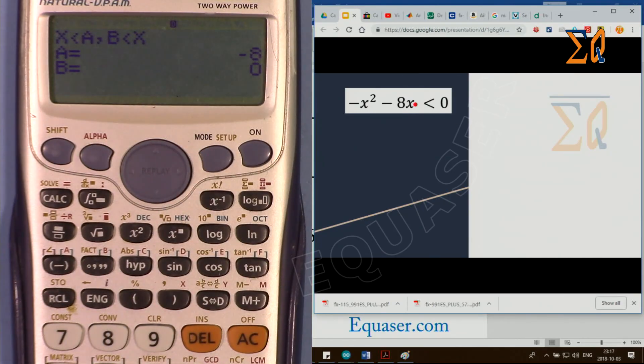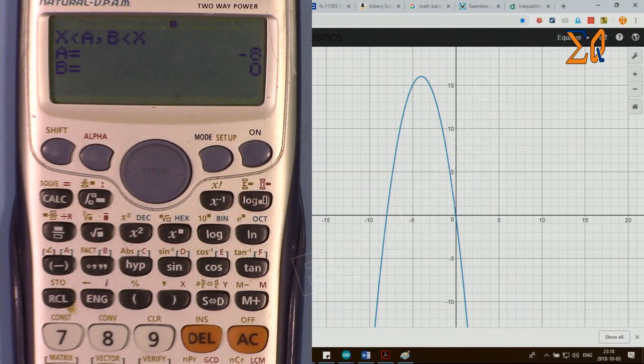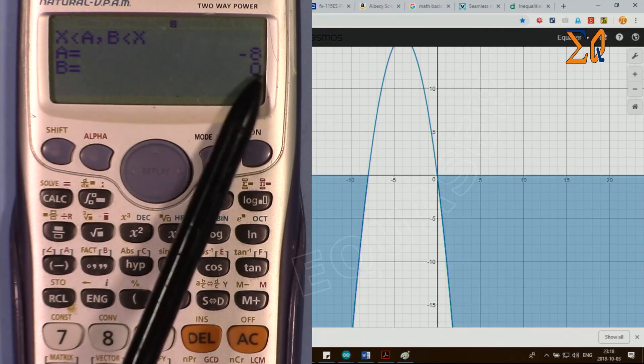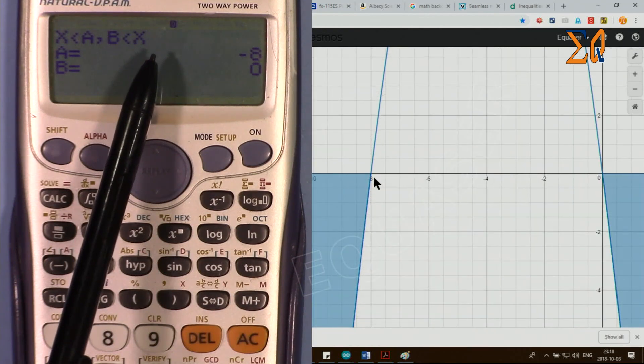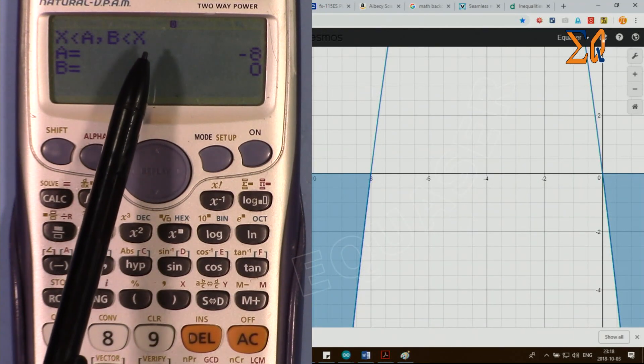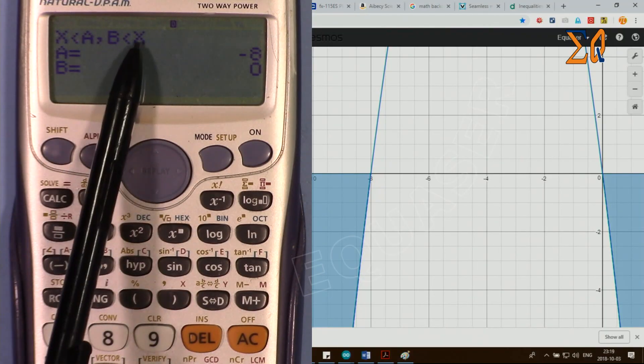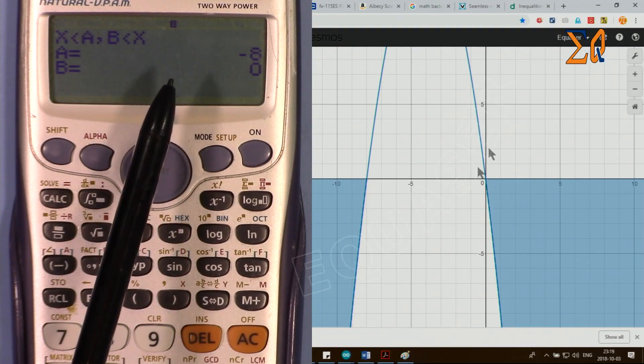Now let's check it. This is courtesy of Desmos.com, and if you see this is our equation. If I show you the shading, this is showing that when x is smaller than −8, y is smaller than 0, and when x is bigger than b, that's 0. So under this condition our equation is true.